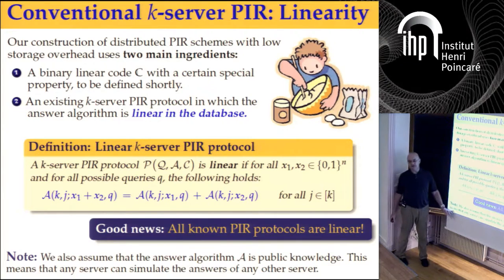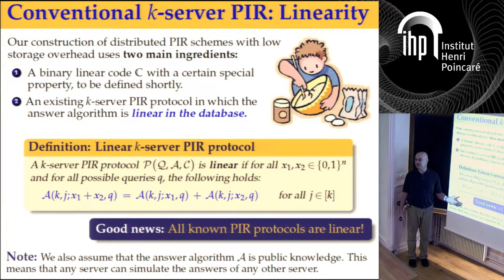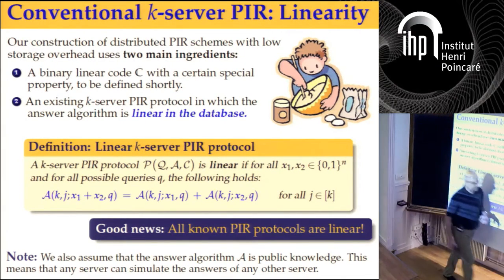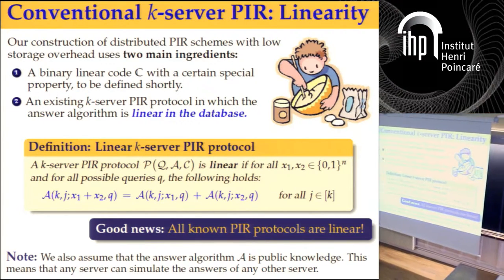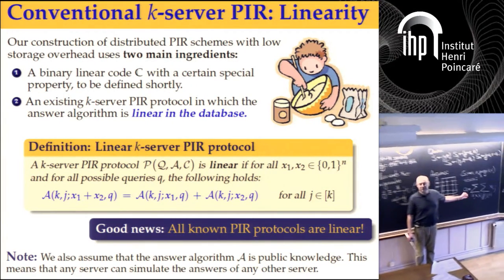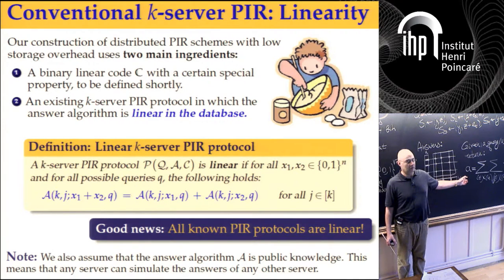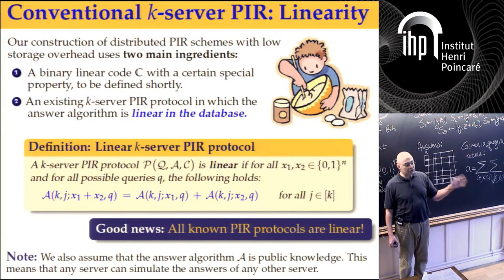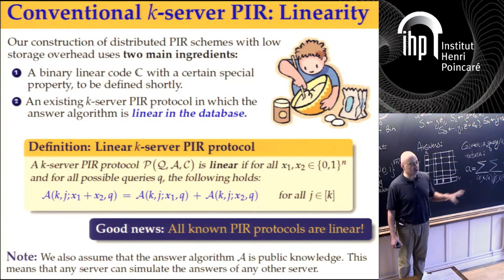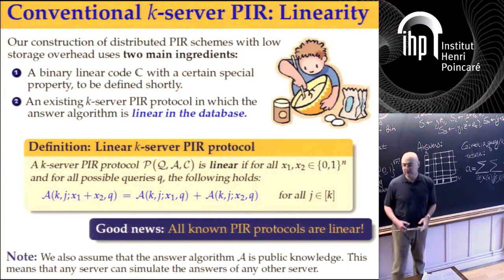One more thing — a tacit assumption in PIR: the answer algorithm A is public knowledge, so all the servers know it. What we require is that if in the original protocol one server does one thing and another is supposed to do another thing, they should all be able to do everybody else's job if required.